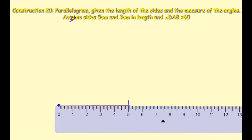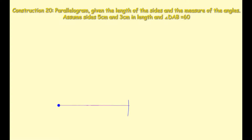I take back out my ruler and connect the dot to the arc. It doesn't matter which part of the arc because it will always be 5 centimeters in length. I'm marking in my 5 to represent the length of that line, labeling the first point A and where my line meets the arc I'm labeling as B.